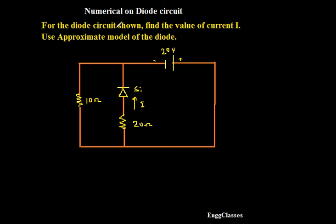The task is for the diode circuit shown, find the value of the current I, use approximate model of the diode. That's what is been given and this is how the circuit diagram looks like. The task is to find the current through the diode, that is I.